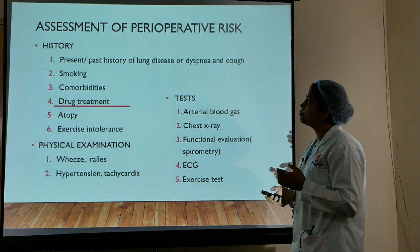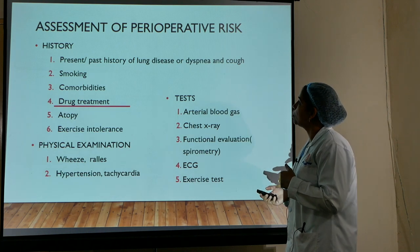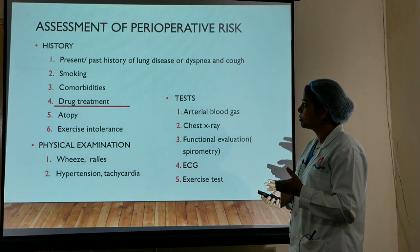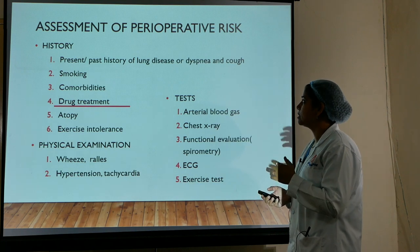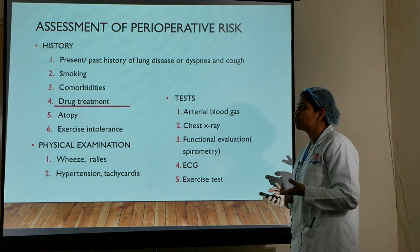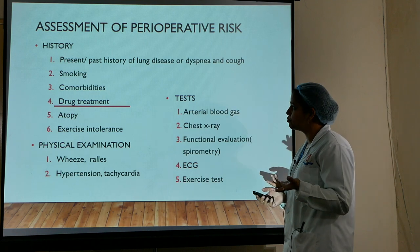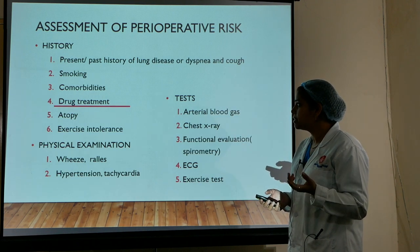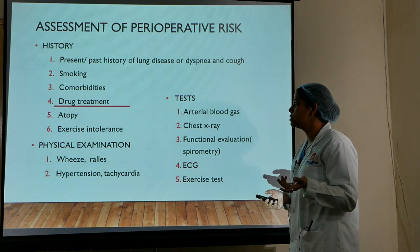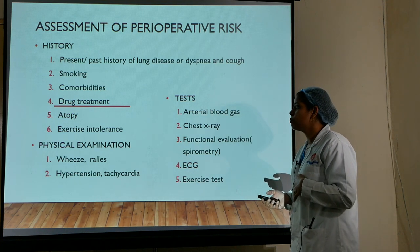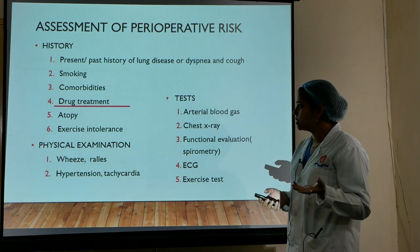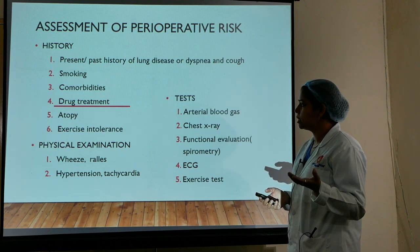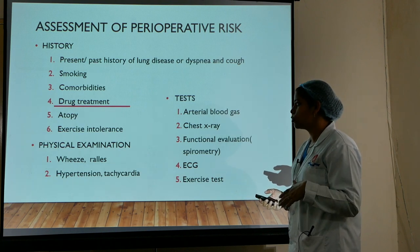Our evaluation starts with a proper history, which should include present and past history of any lung diseases, associated symptoms like dyspnea and cough, history of smoking, co-morbidities like hypertension and diabetes, any drug treatments, and atopy — meaning allergic reactions to any drug, pollens, dust, etc. Exercise tolerance should also be assessed.